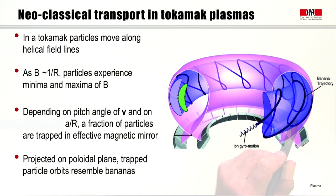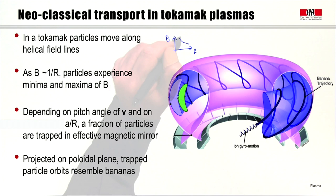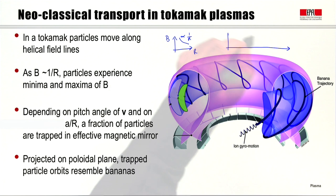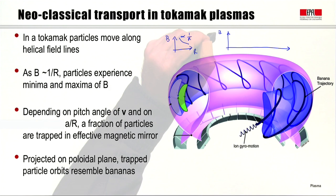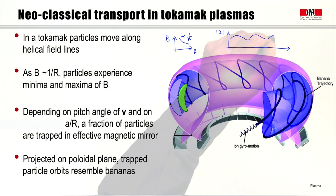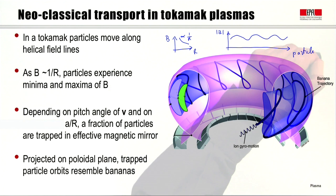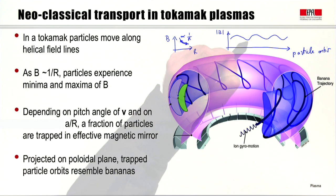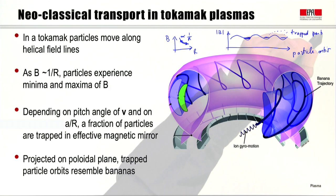The tokamak is constructed exactly so that on average the drifts are compensated and particles can be confined. But as the particles go around the helical structure, they move in and out of the torus. The magnetic field is proportional to 1/r, where r is the distance from the axis of the torus. So particles see a field that oscillates up and down along their orbit, experiencing minima and maxima of B. A particle may therefore be trapped in the minima of B by the mirror trapping effect discussed in the first part of the course.